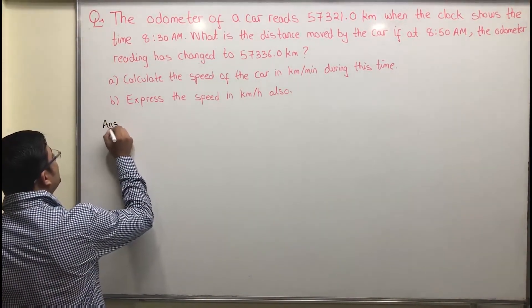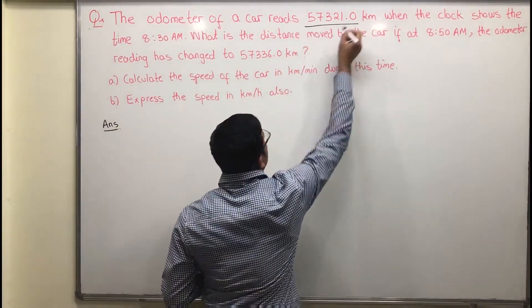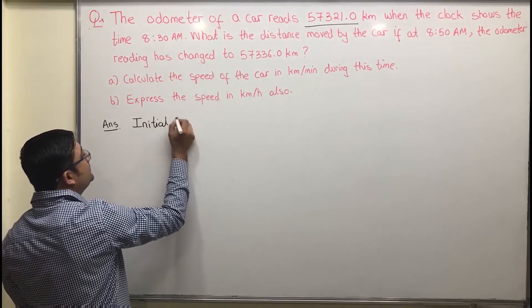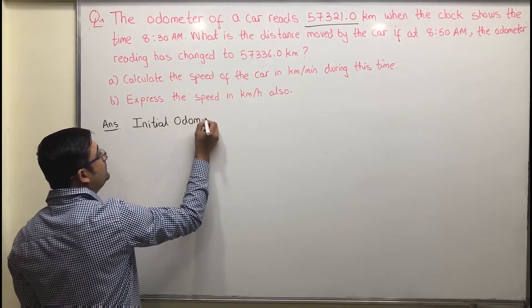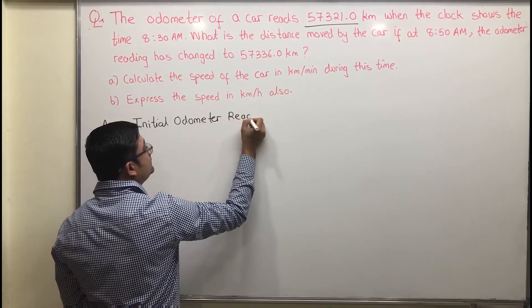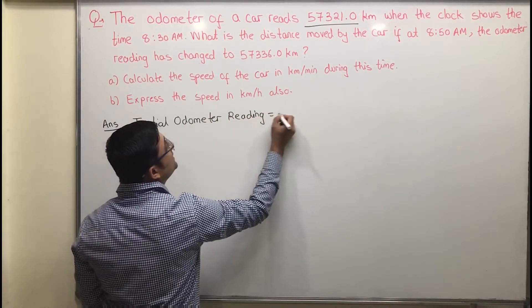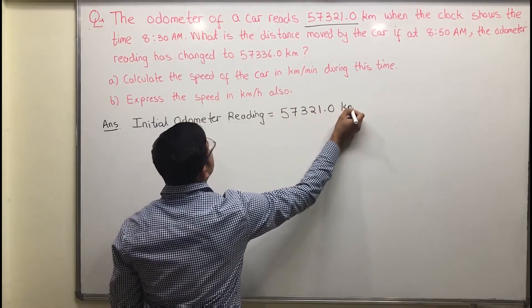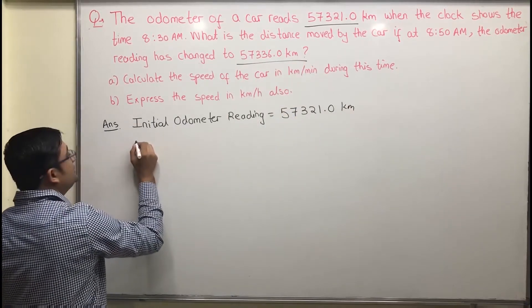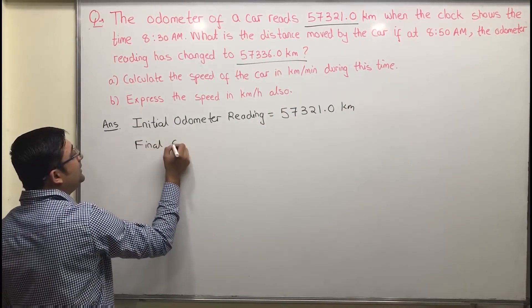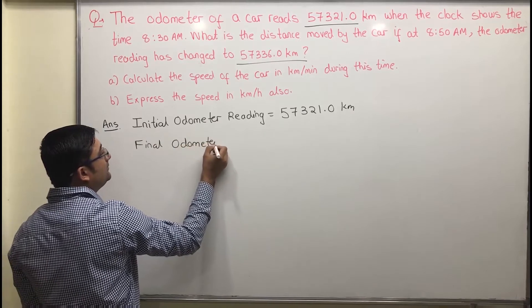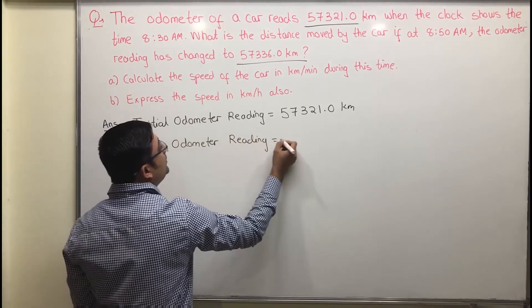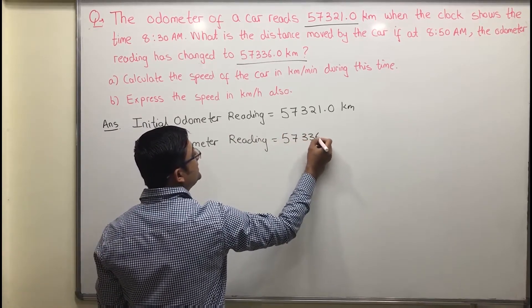Begin by writing down what is given. The initial odometer reading is 57321.0 km. The final odometer reading is 57336 km.